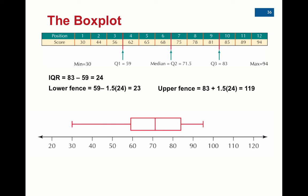But this graph basically shows the five-number summary from left to right. The minimum at 30, the Q1 at about 59, Q2 or the median at about 71, Q3 at about 83, and the maximum at about 94. So it's a quick representation of the five-number summary.